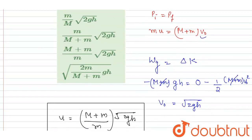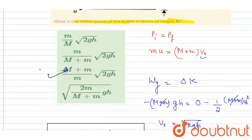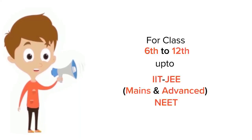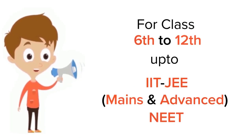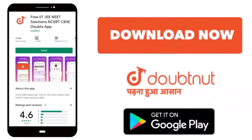you can see here (M + m)/m times root 2gh. C will be the correct answer. Thank you. For class 6 to 12th, IIT-JEE and NEET level, trusted by more than 5 crore students, download Doubtnet app today.